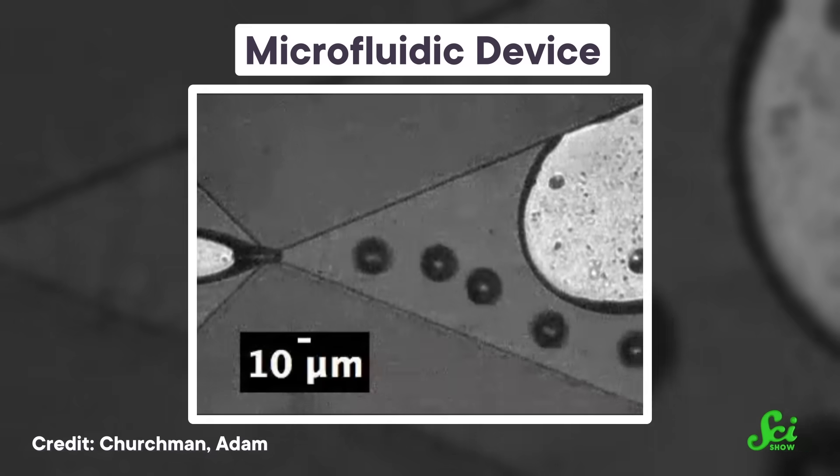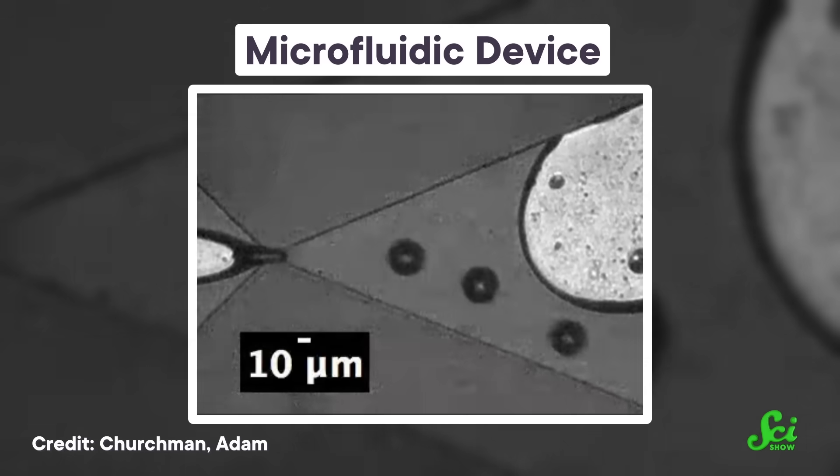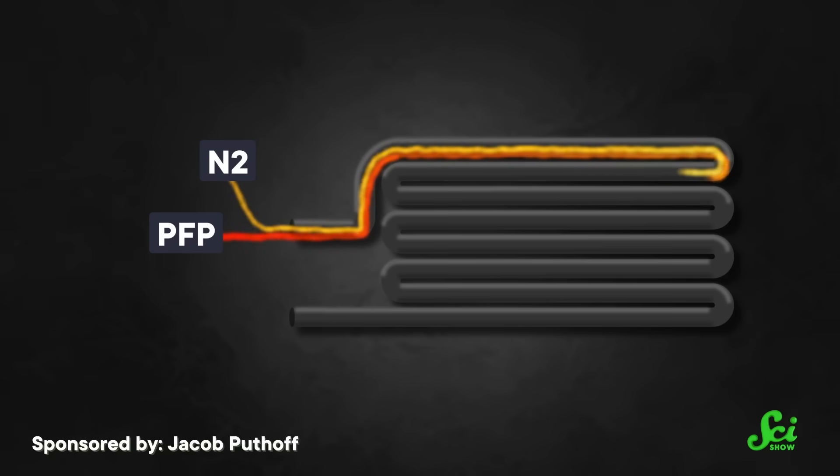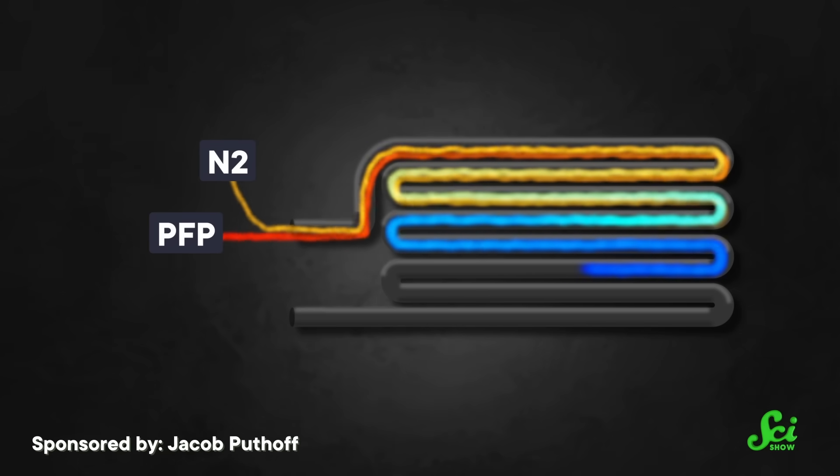Microfluidic channels are pretty much what they sound like. They are extremely tiny tubes, like only a few micrometers in diameter, that small amounts of fluid can move through. So when the fluids combine in the shared chamber, the perfluoropentane evaporates, and voila, a nice burst of cold.